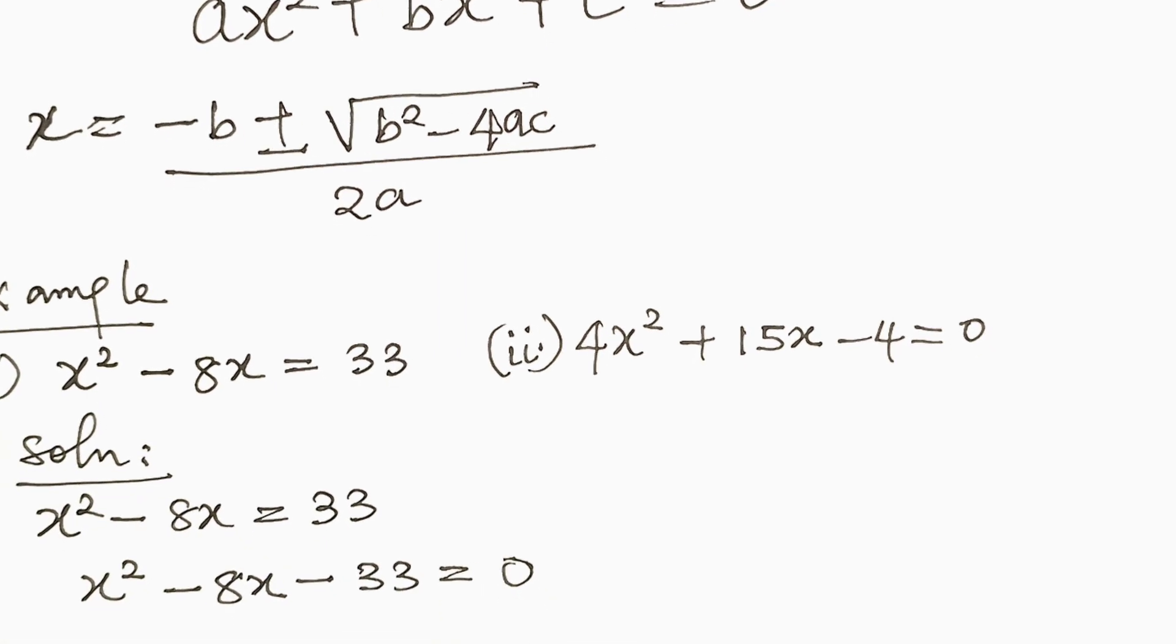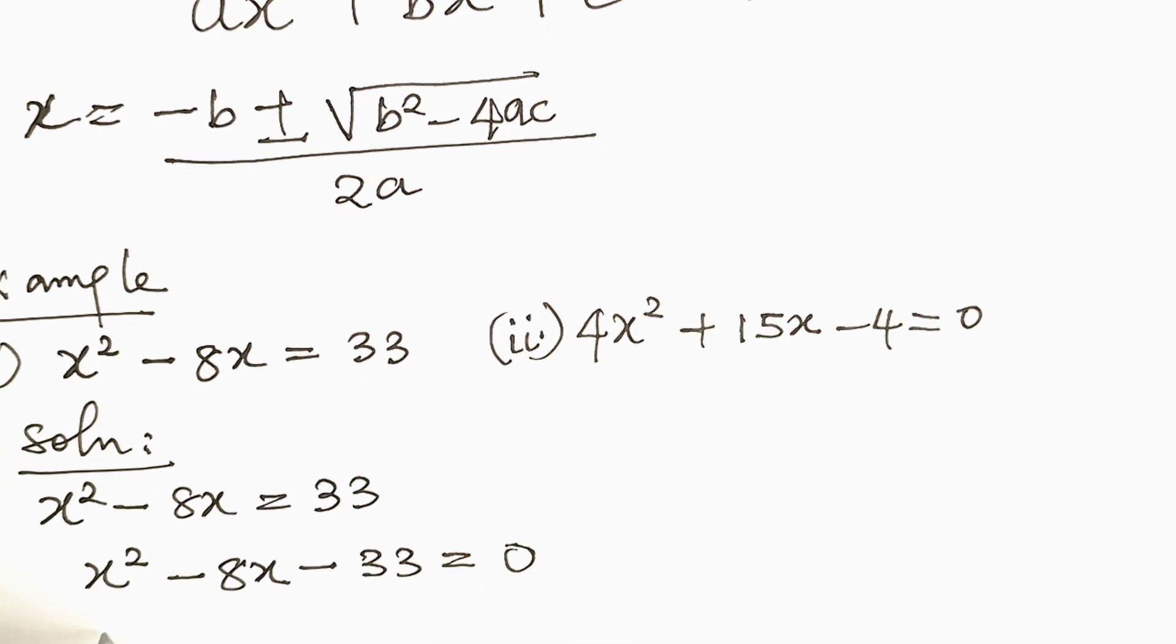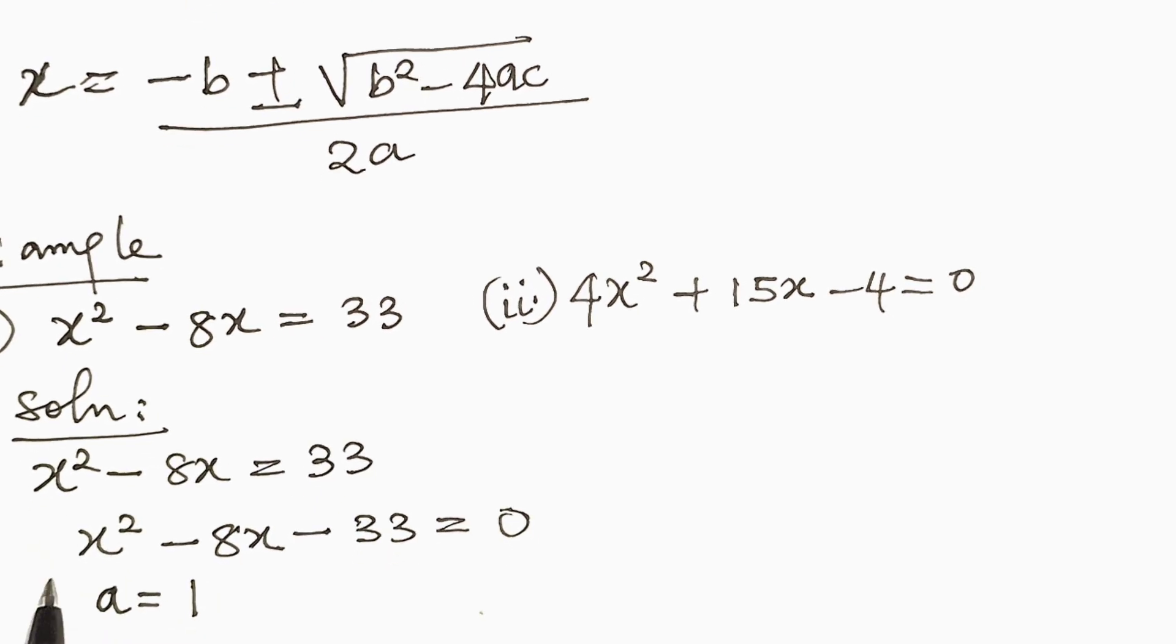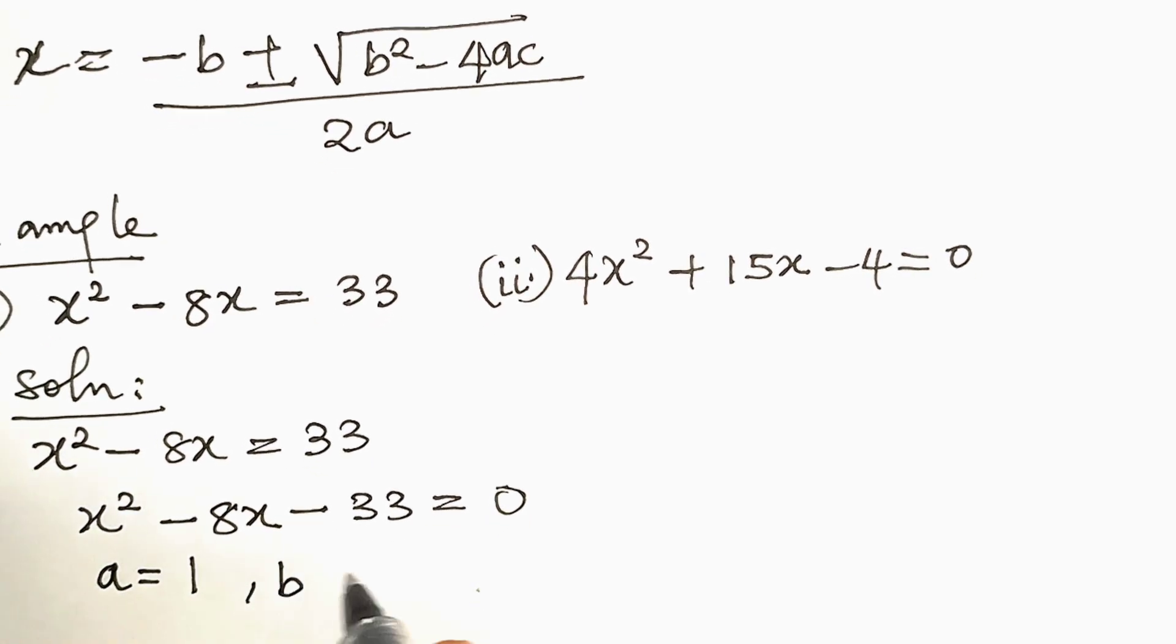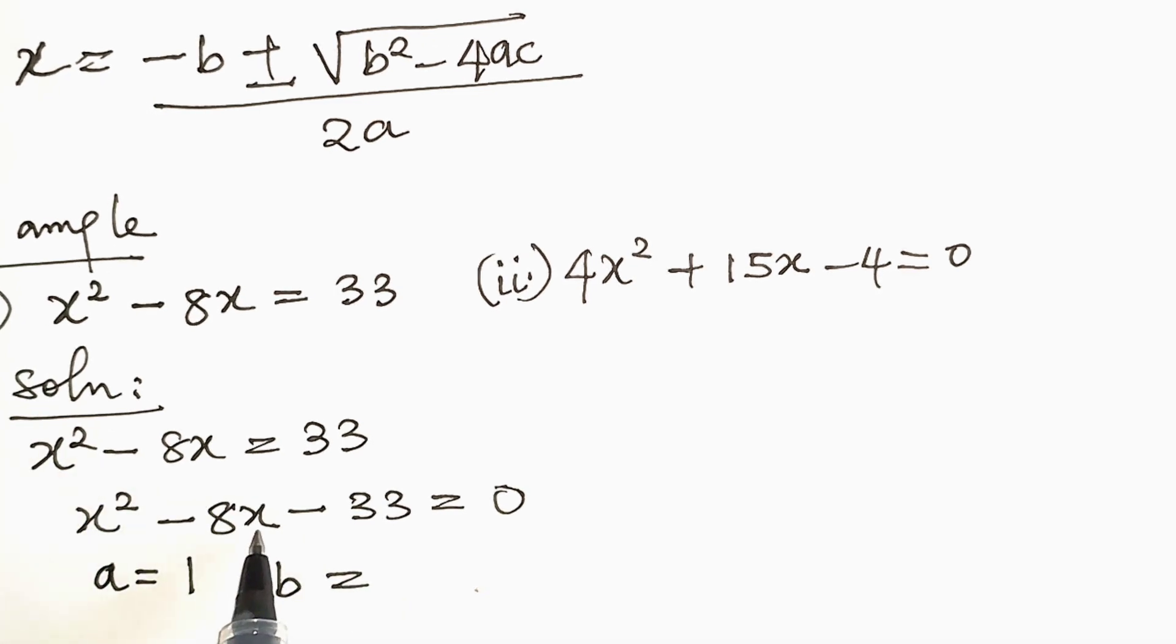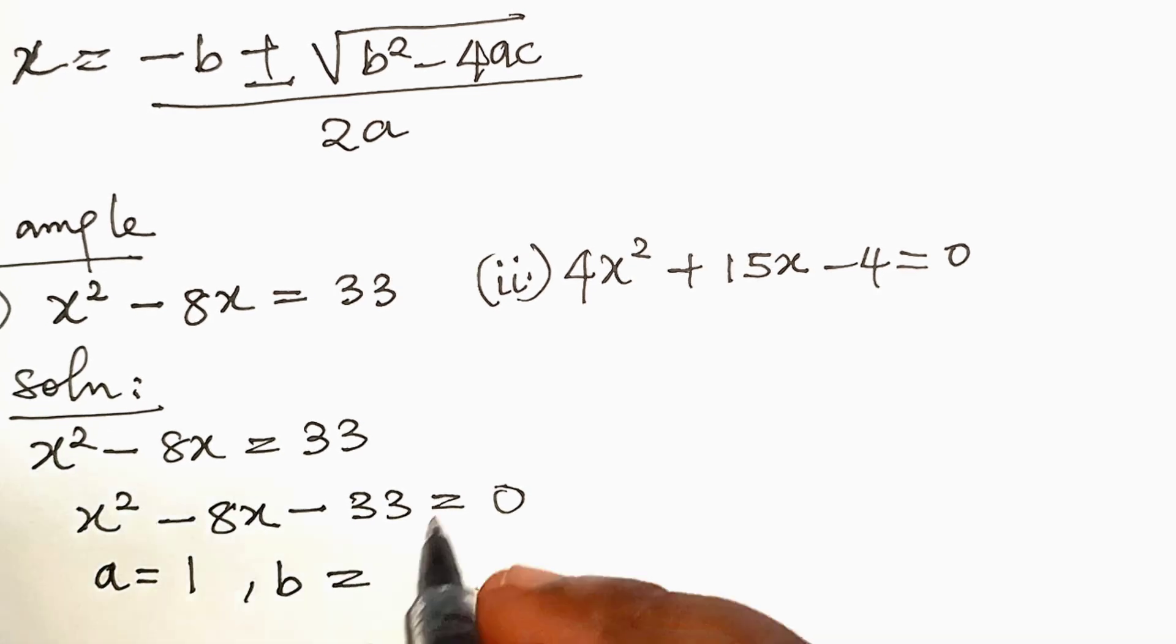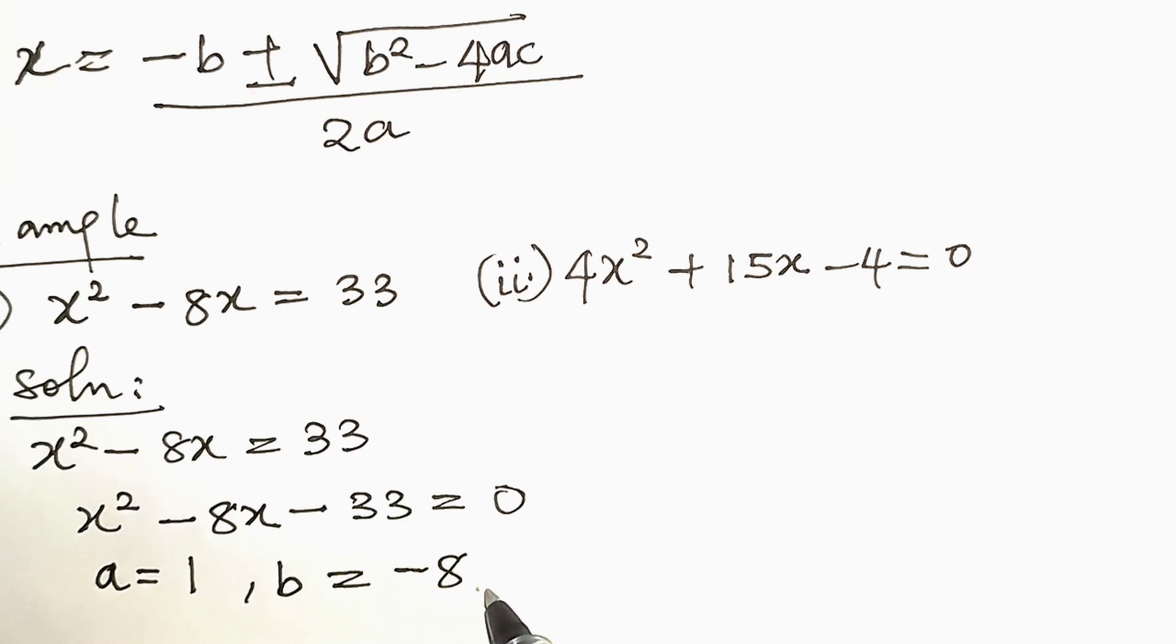So, we can see here that a is equal to 1. a is the coefficient of x squared. Then, b, b is the coefficient of x. b is equal to minus 8. While c, which is the constant term, is equal to minus 33.